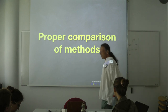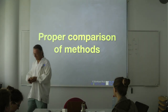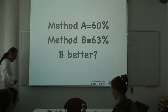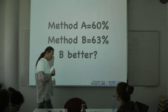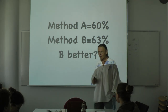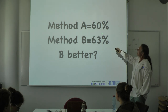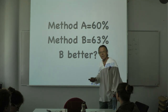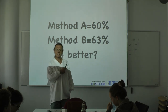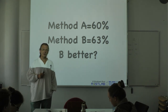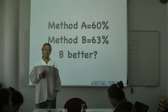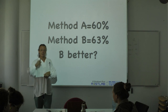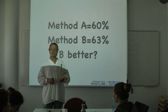To understand proper comparison of methods, let's begin. You are a reviewer of a manuscript and the manuscript states: method A gets 60%, method B gets 63%. Typically, the author has developed method B while method A existed before, and the author wants to publish saying method B, my new method, is better. But you have to review these numbers — can you make a decision?